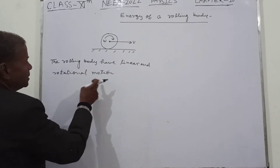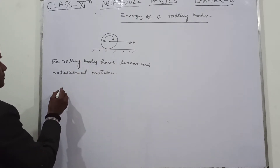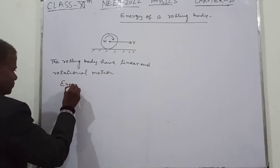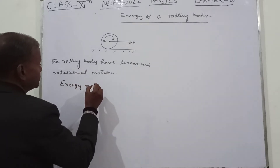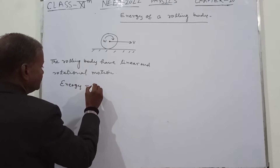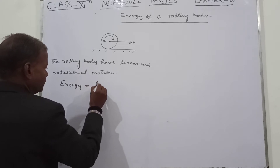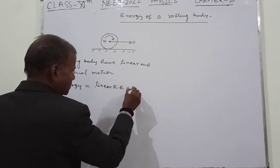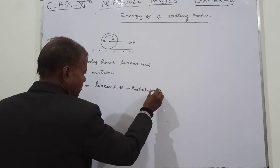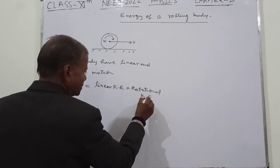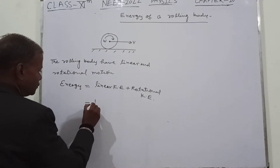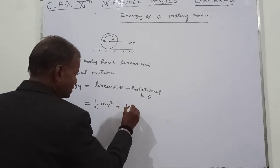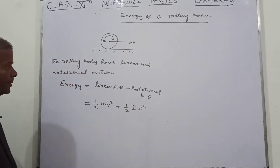Because the body moves in a direction and also rotates about its own axis, it has both rotational and linear motion. So the total energy is equal to linear kinetic energy plus rotational kinetic energy. Linear kinetic energy is one-half mv², and rotational kinetic energy is one-half Iω².